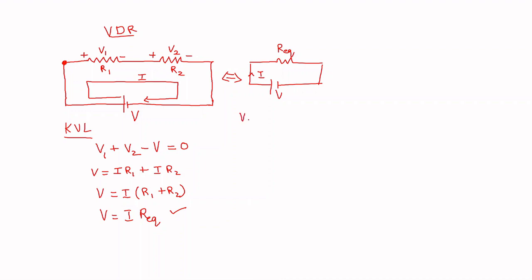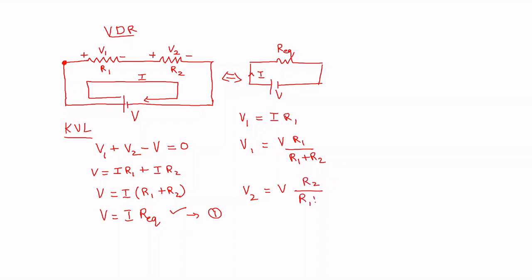Now let us find V1, the potential drop across R1, which is I·R1. From the equation I is equal to V divided by R equivalent, which is R1 plus R2. So V1 equals the total potential V into R1 divided by R1 plus R2. Similarly, you can also find V2, which is the total potential V into R2 divided by R1 plus R2.